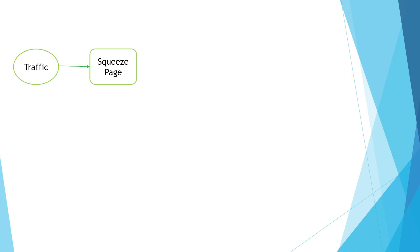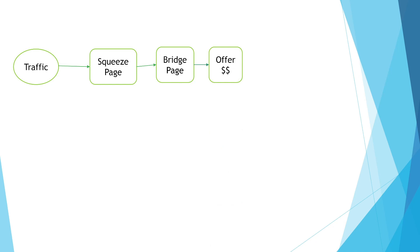Let's take path number one. When the traffic submits their details via the squeeze page, it then moves to the bridge page. The bridge page is also known as a pre-sale page — it is there to summarize the offer that is coming up. When the traffic moves on to the offer, they will read about it and decide to buy or not. When they decide to buy, they will move into buyers list C.